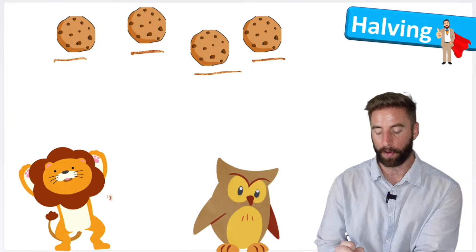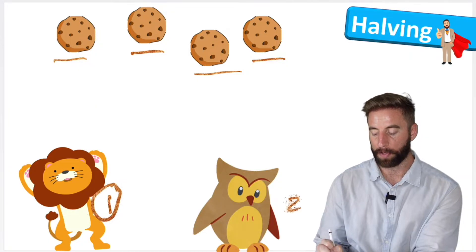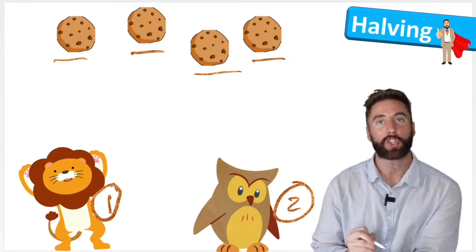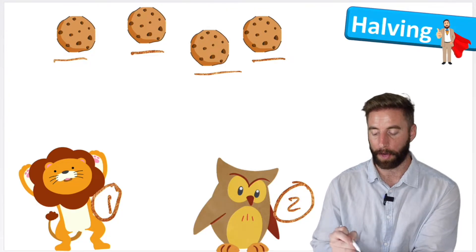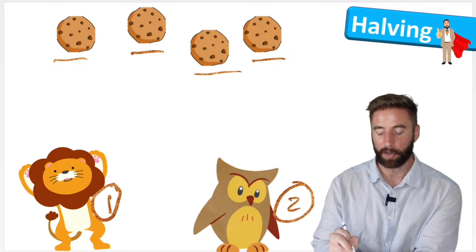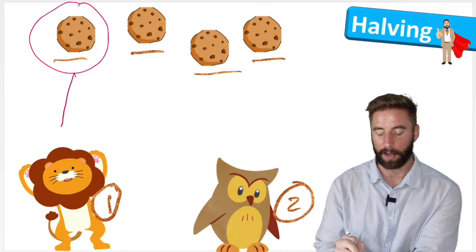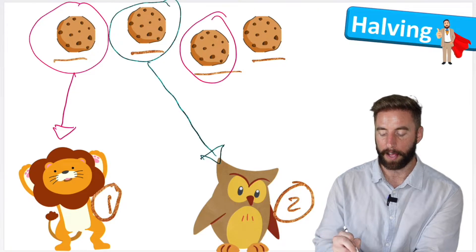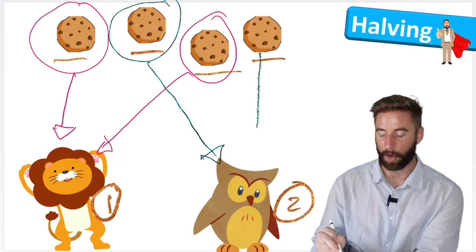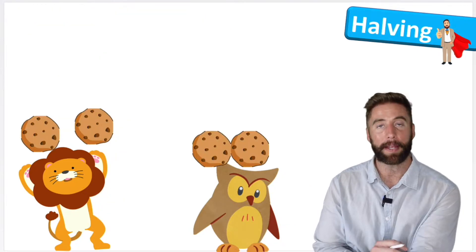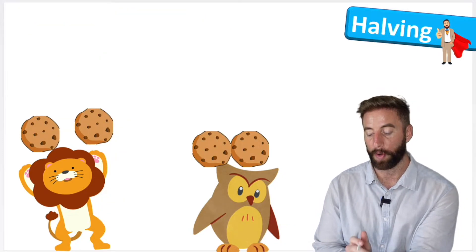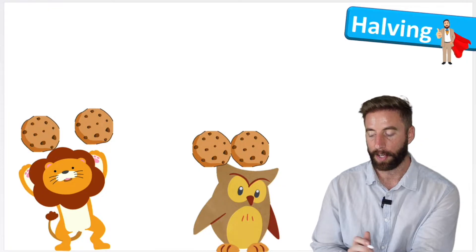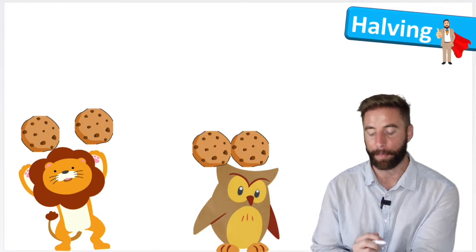I have two groups here. So I'm going to share my cookies evenly between my two groups. This cookie is going to go to Mr. Lion, but this cookie is going to go to Mrs. Owl. This cookie will go to Mr. Lion, and this cookie will go to Mrs. Owl. That means they each have two cookies each.